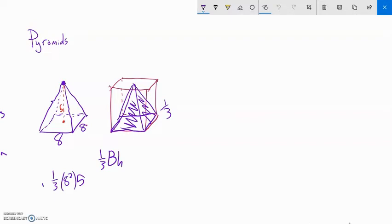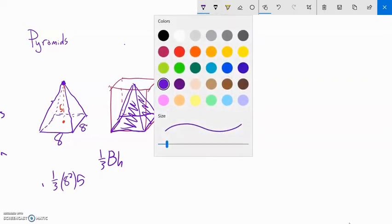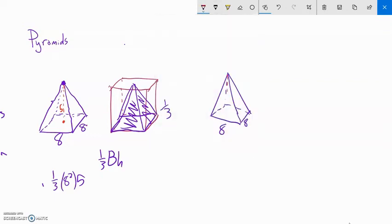So how are we going to find the surface area of this? Let me draw another pyramid here and I'll just keep those same dimensions, 8 by 8, and then I have a height of 5. So what I'm going to need to know, what I want to do is unfold it.